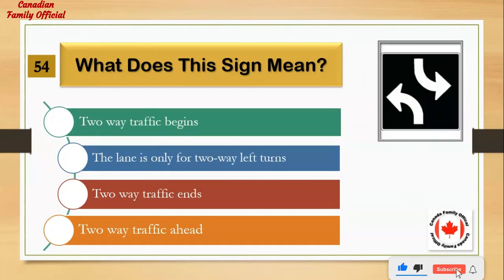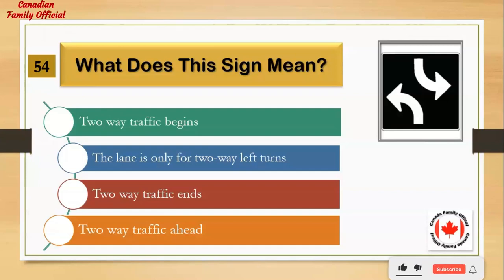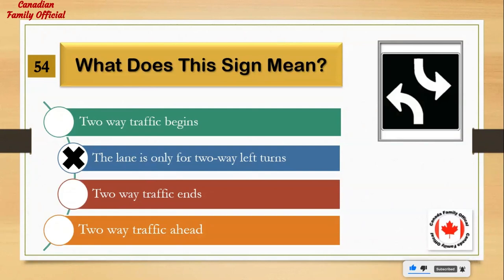What does this sign mean? Number 1: two-way traffic begins. Number 2: the lane is only for two-way left turns. Number 3: two-way traffic ends. Number 4: two-way traffic ahead. And the answer is: the lane is only for two-way left turns.